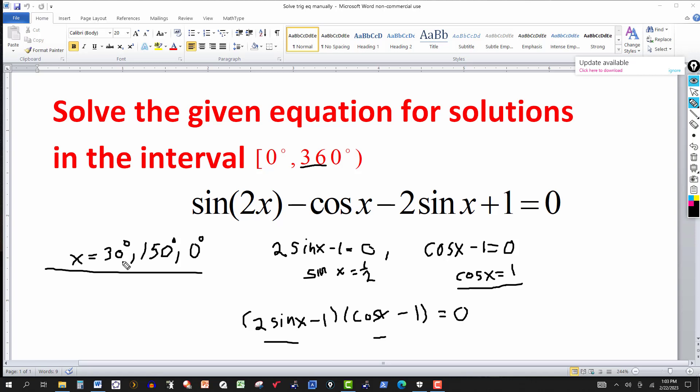All you have to do is add a multiple of 360 to 30 degrees, add a multiple of 360 to 150. The same thing with zero, add a multiple of 360. And you have it.